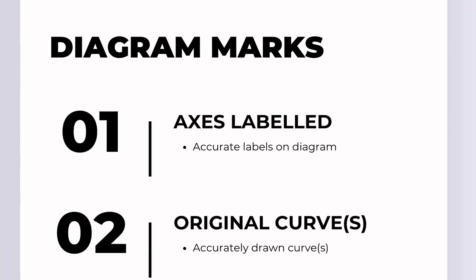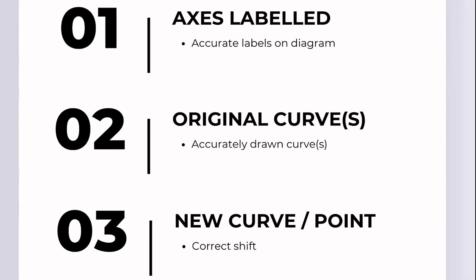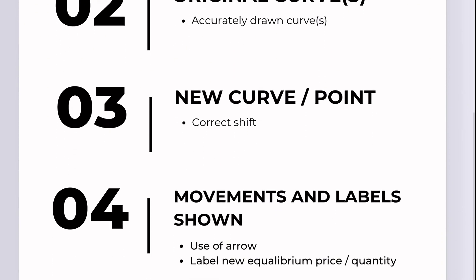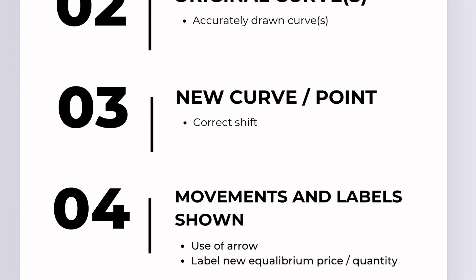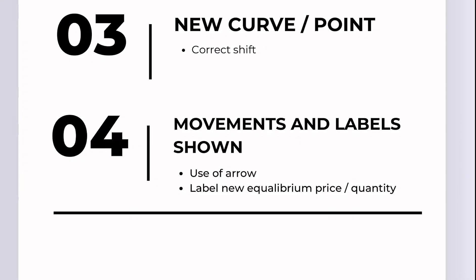Here's a breakdown on how marks are allocated for the diagram questions. Your first mark comes from labelling both of your axes. Your second mark is when you accurately draw the original curves. The third mark comes from the new curve or the new point, such as a shift in demand, supply or the PPF. And lastly comes from drawing the arrows, illustrating the shift, or a new label and equilibrium. I would do both.